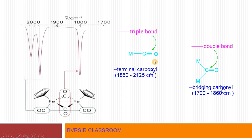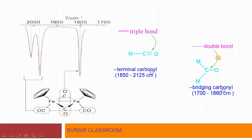Terminal carbonyl has a triple bond character, so we observe stretching frequency in the region of 1850 to 2125 centimeter inverse — this is the terminal, higher value range: 1850 to 2125 cm⁻¹.